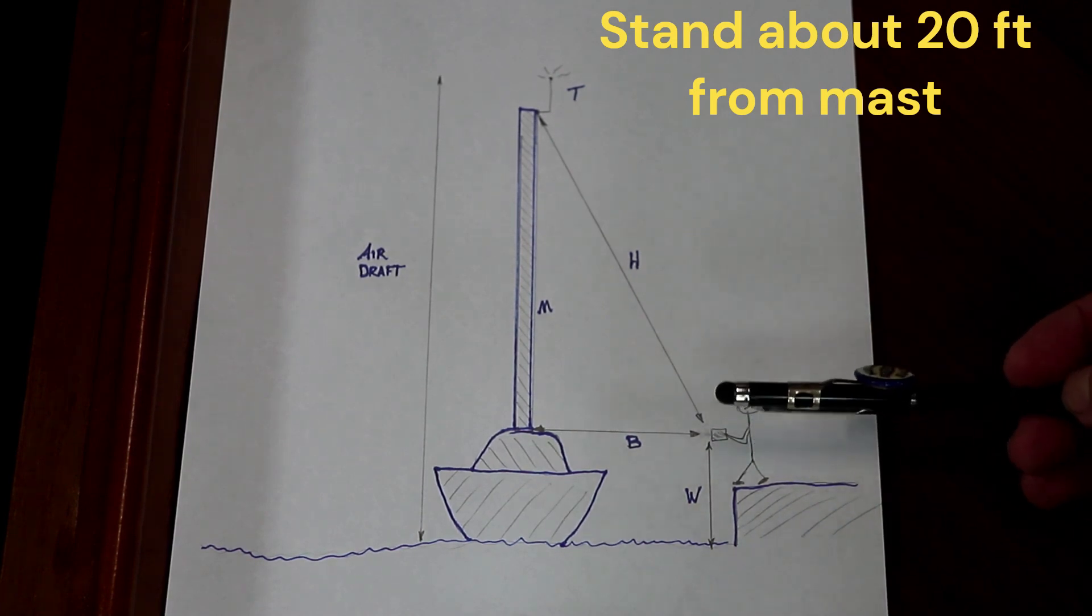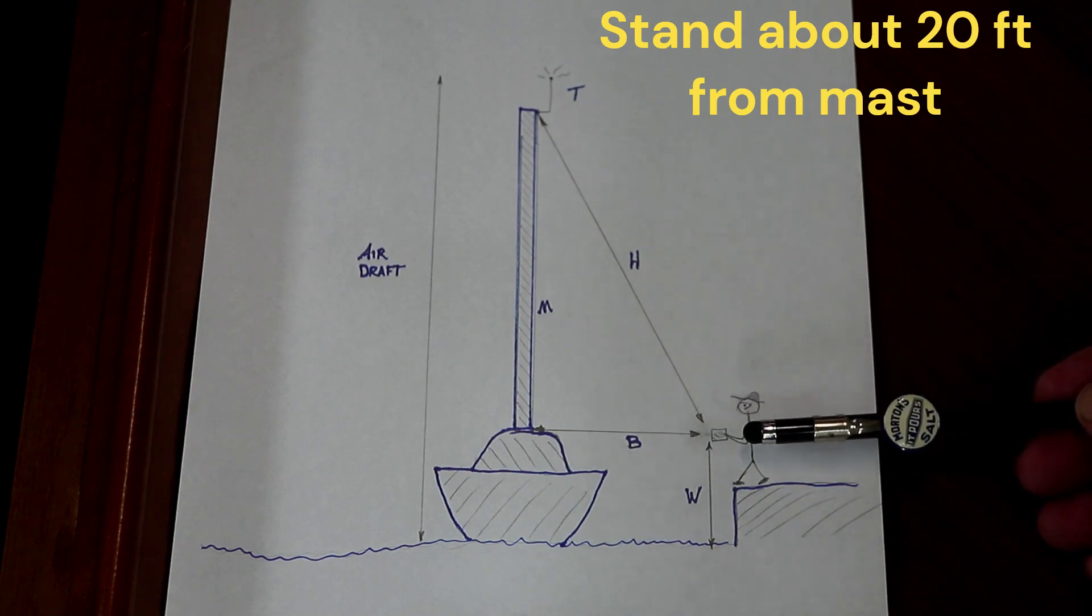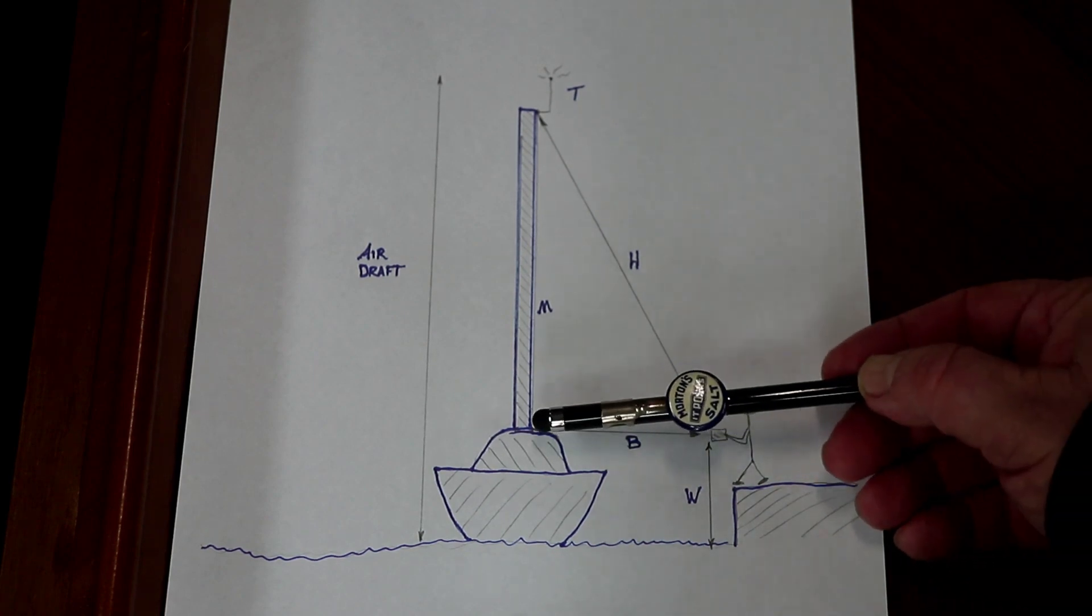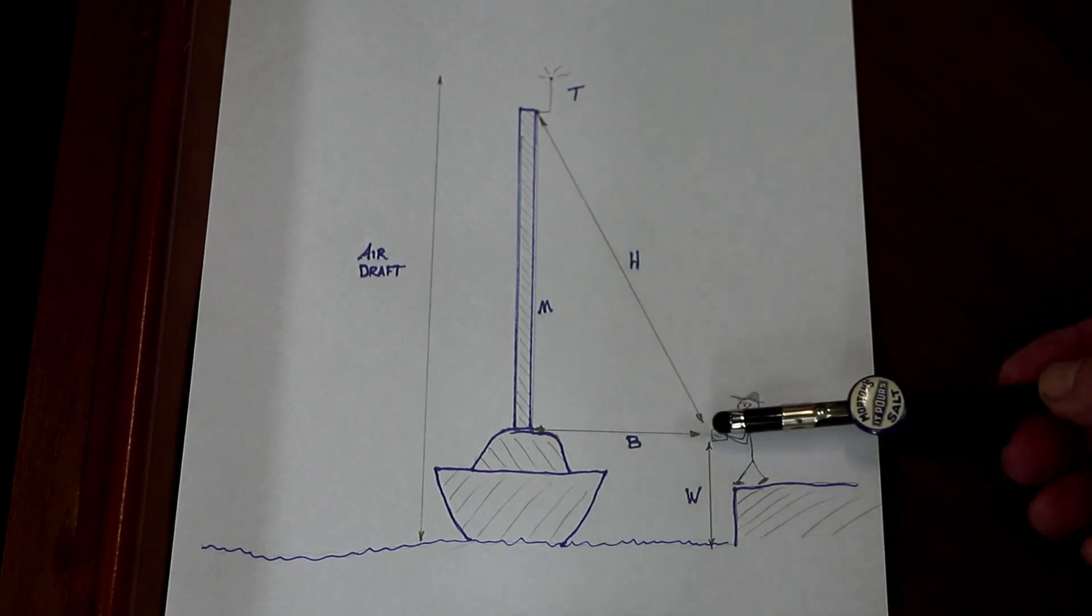Mr. Stickman has his laser measuring tool in hand at chest level, holding it with two hands to keep it steady, and he's going to shoot directly across to the base of the mast to get B.